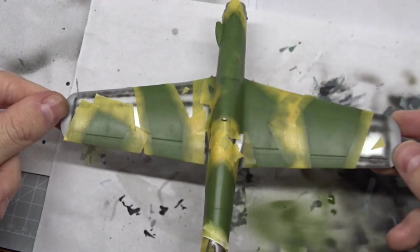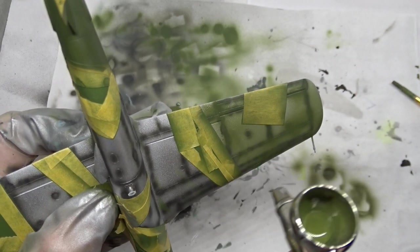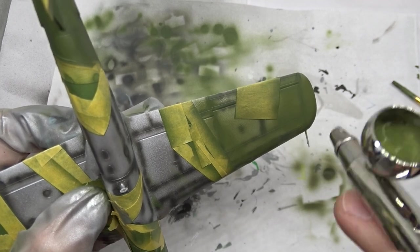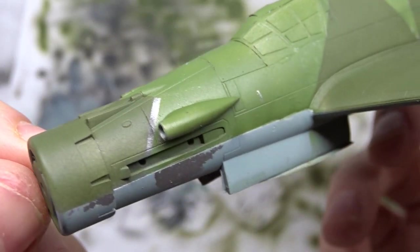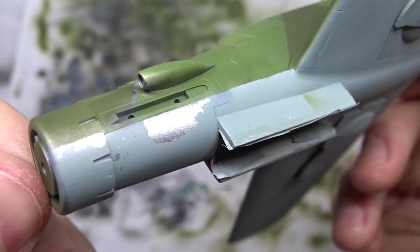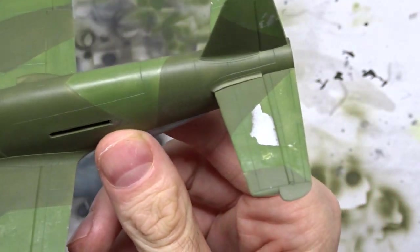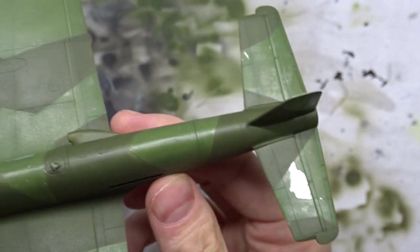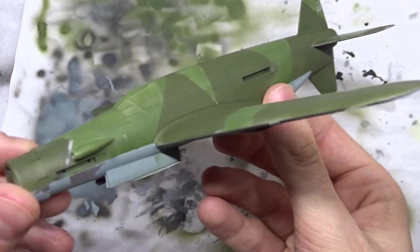After the paint had dried I masked the RLM 82 areas off and airbrushed RLM 81 on the remaining areas. Again this worked flawlessly, but there were a few areas left where I had to make some corrections. With the layer of worn effects underneath I had the impression that the paint is more prone to scratching, so I had to be very careful with masking.